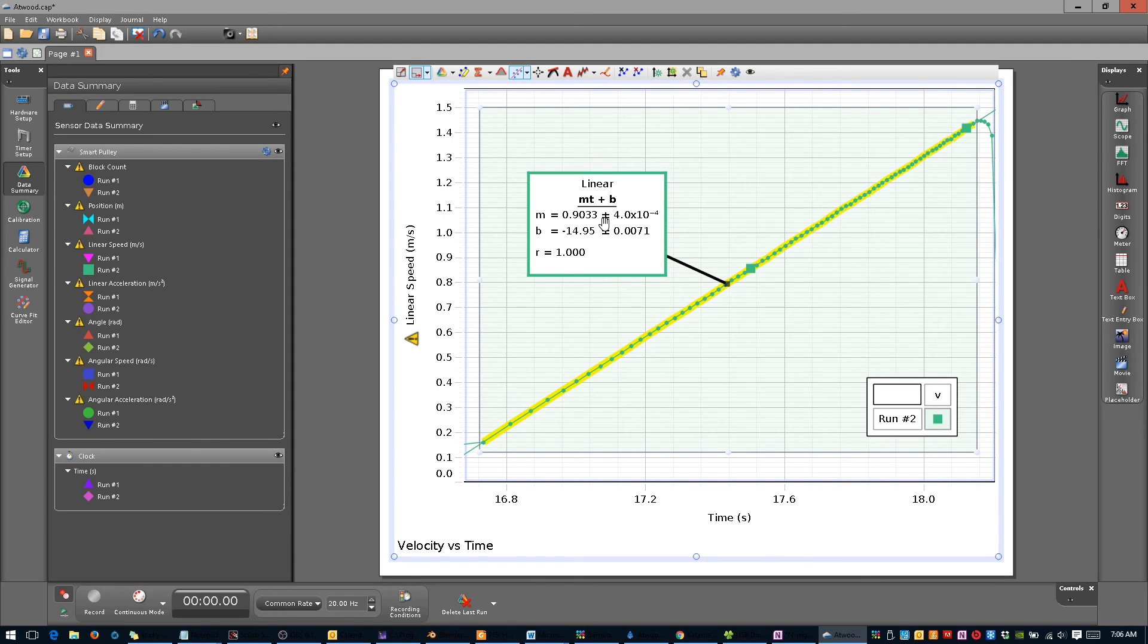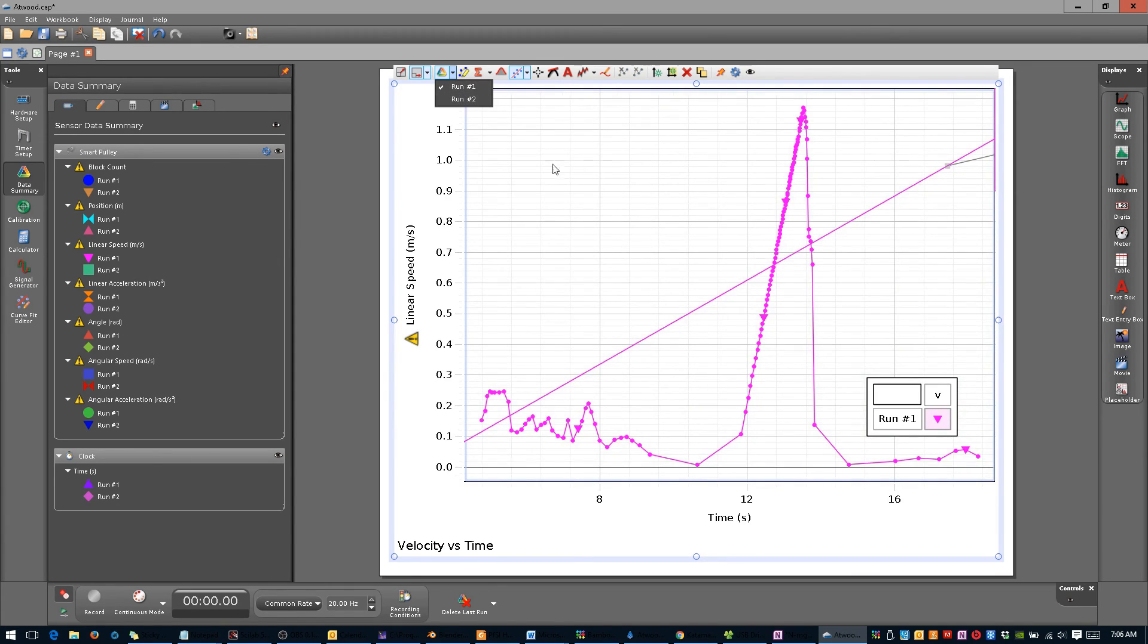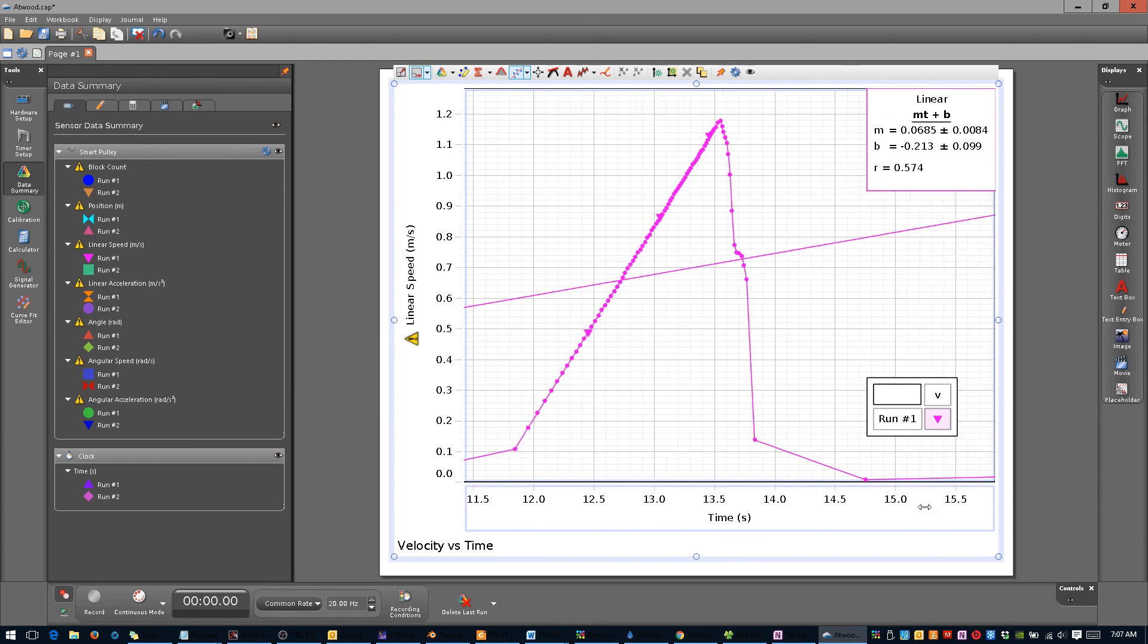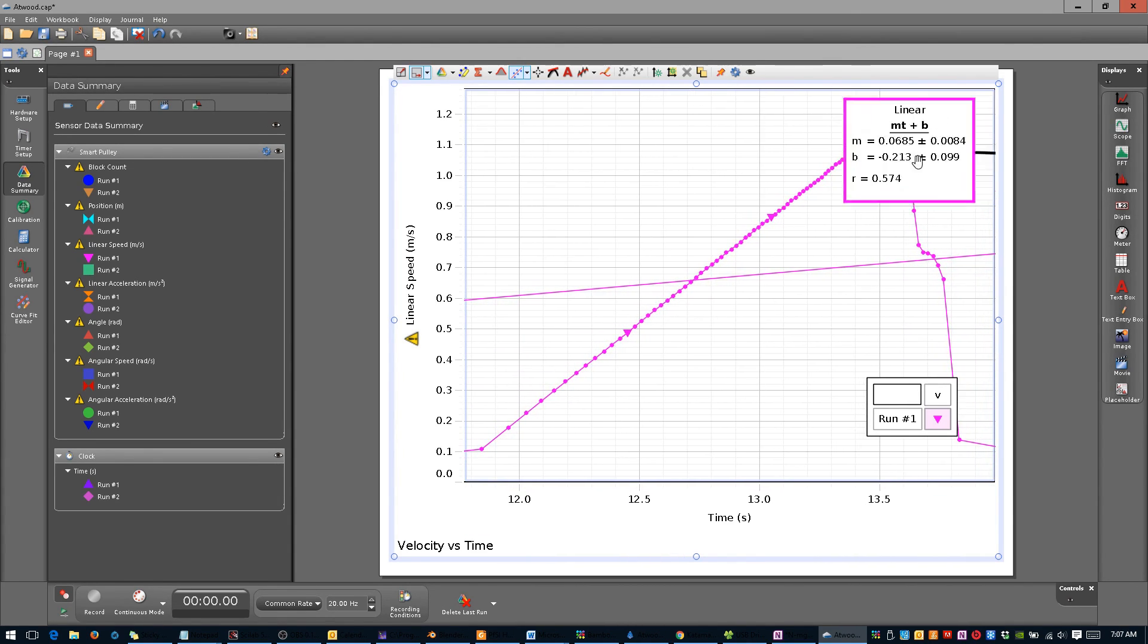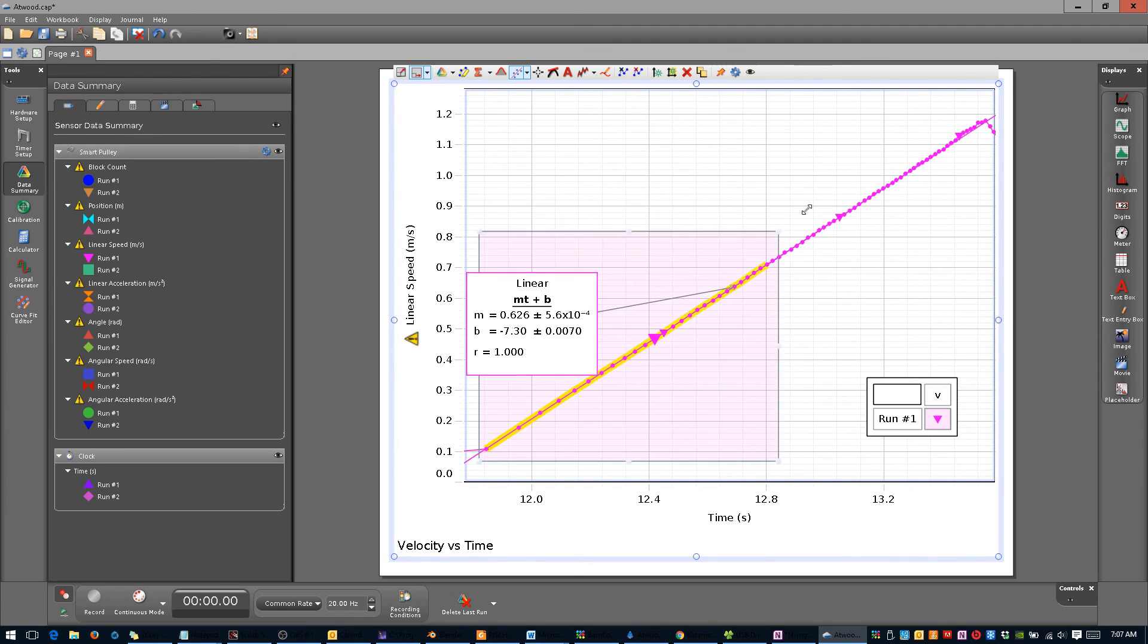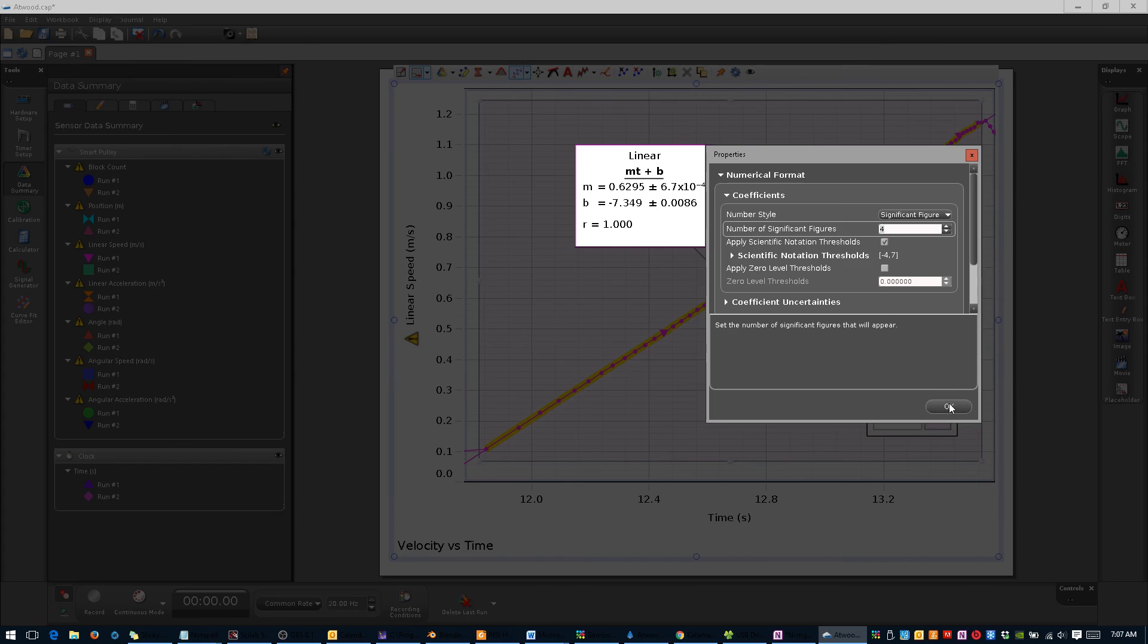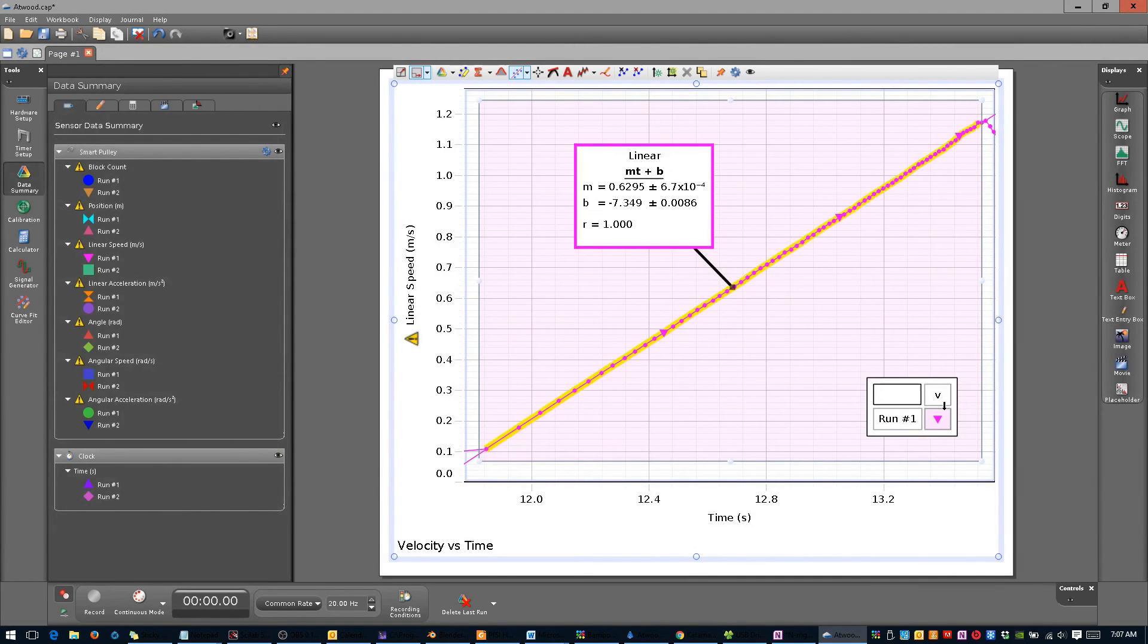We need to repeat this process for the remaining trials. To select another run, click the drop-down menu next to the multicolored triangle in the toolbar. Select a run you haven't analyzed yet. Repeat all previous steps. Pan, Scale, Pan, Scale, Highlight data, Adjust boxes, Fix the significant figures, and then record the value of the slope.